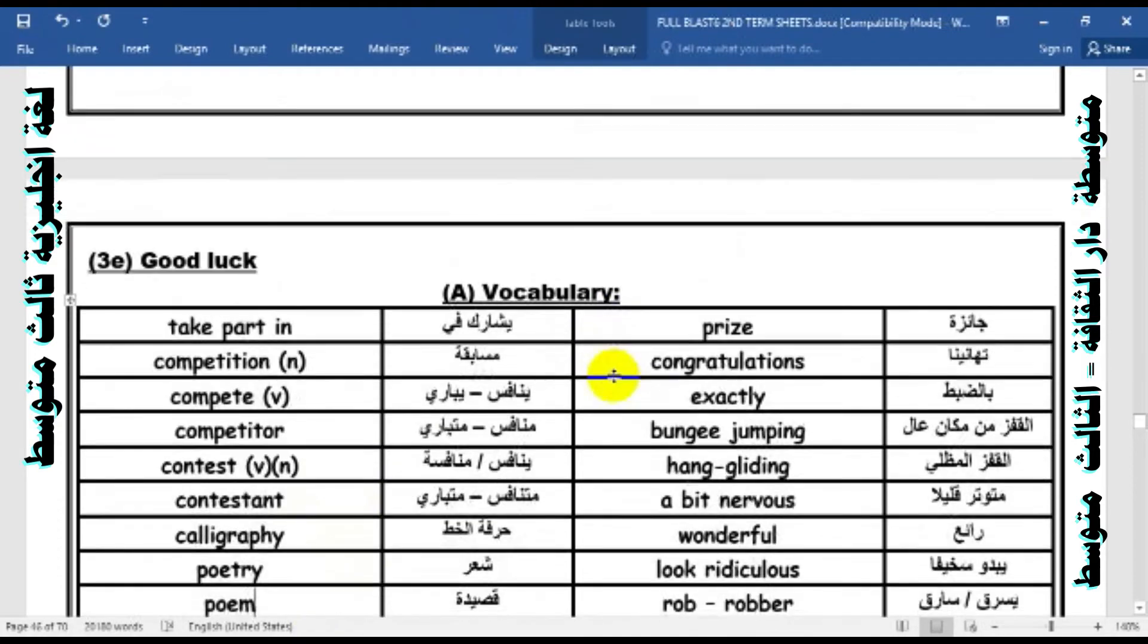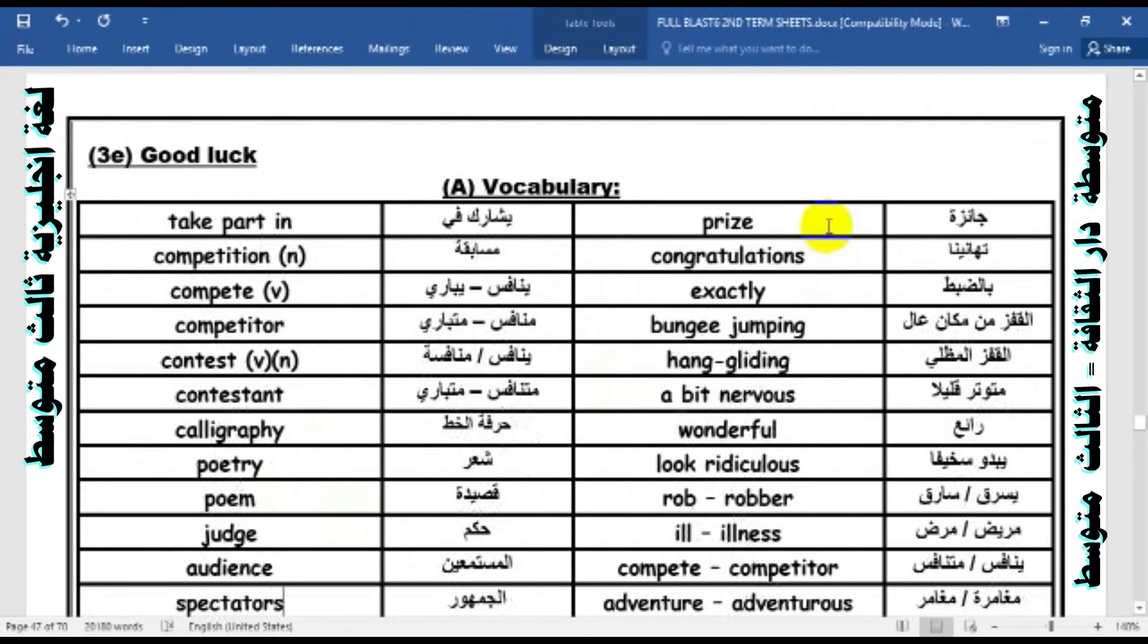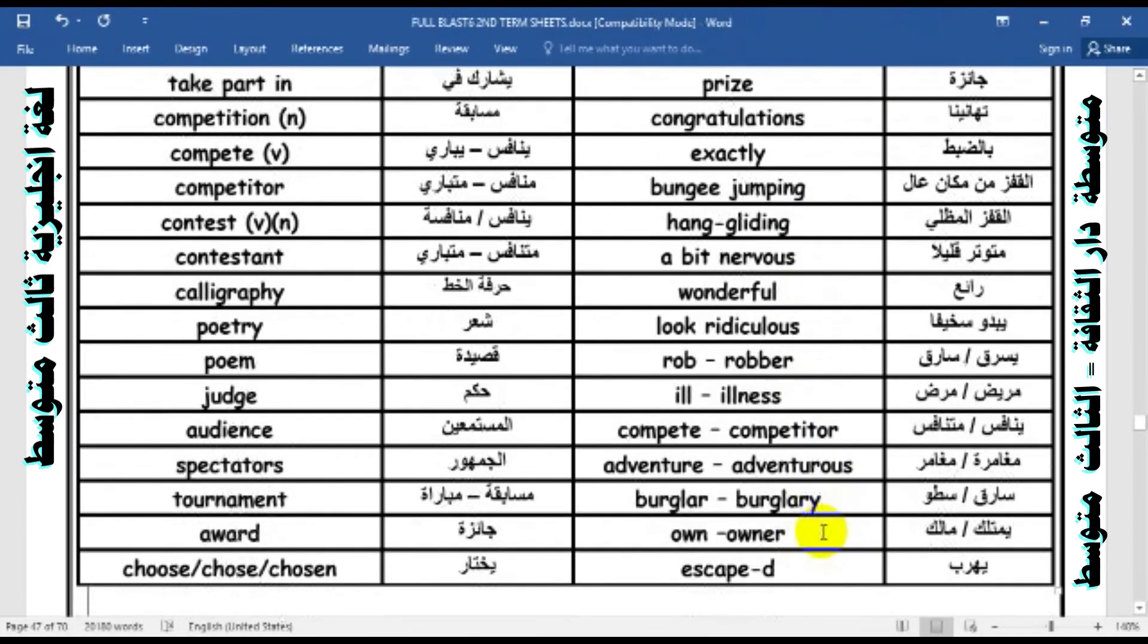The first word is prize, congratulations, exactly, bungee jumping, hang gliding, a bit nervous, wonderful, look ridiculous, roba, ill, illness, compete-competitor, adventure-adventurous, burglar-burglary, own-owner, escape, skipped.